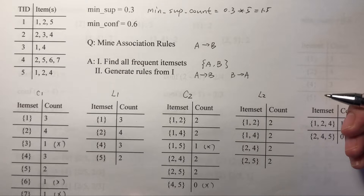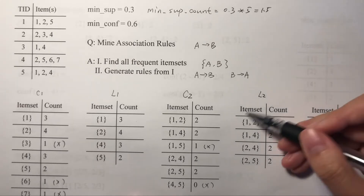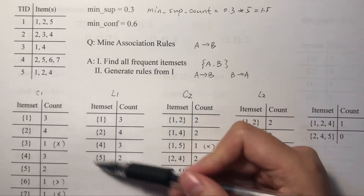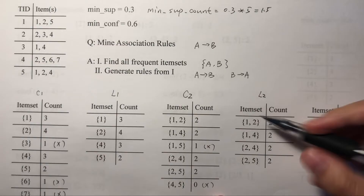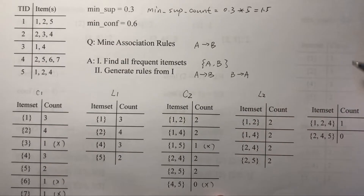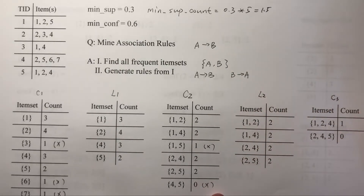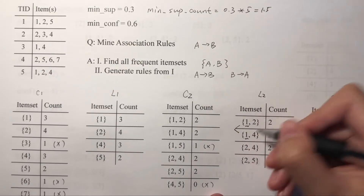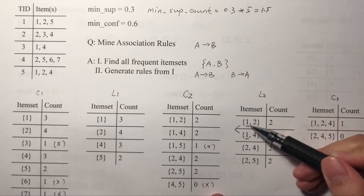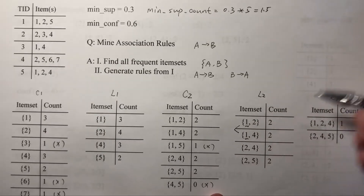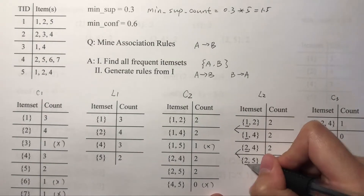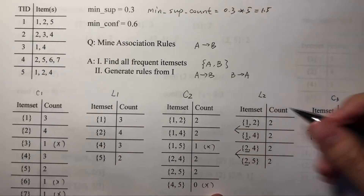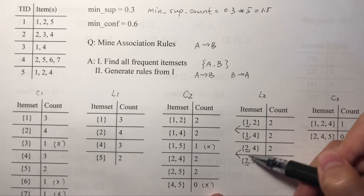Now we level up to level three. We need to generate candidates from the previous level. For going from level two to level three, we use the join step: we join two itemsets if their first element is the same. We join {1,2} and {1,4} because their first element is the same, combining them as {1,2,4}. We also join {2,4} and {2,5} to get {2,4,5}. We do not combine itemsets whose first element is different.